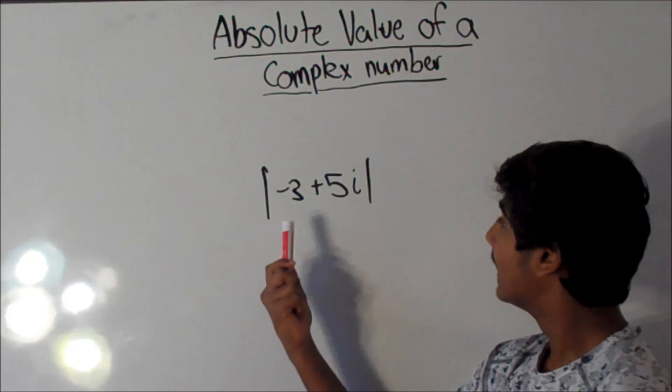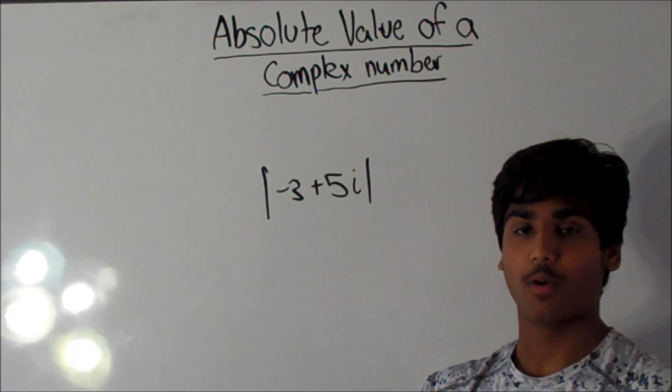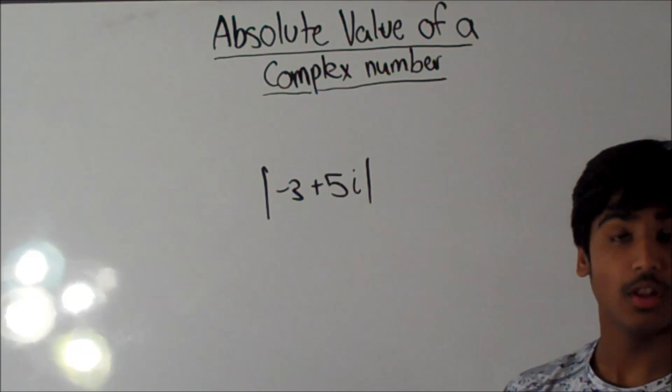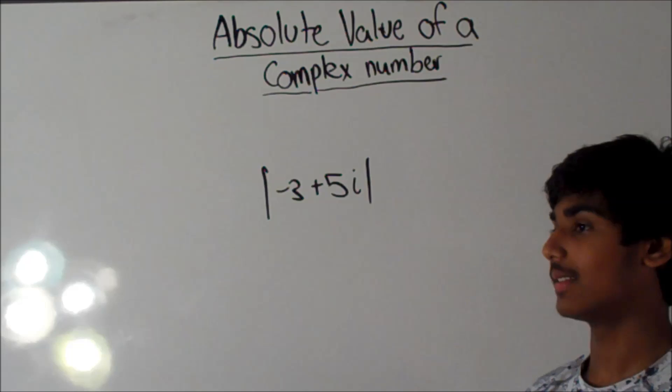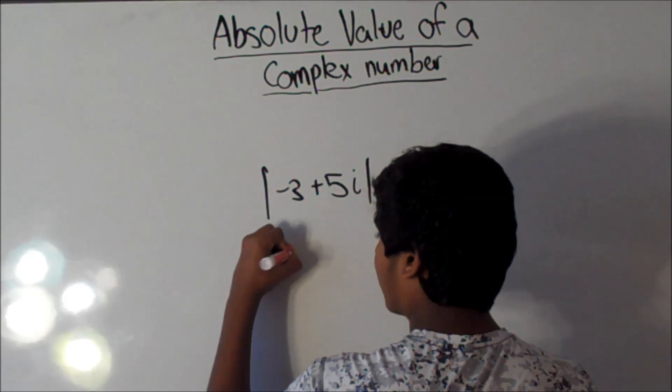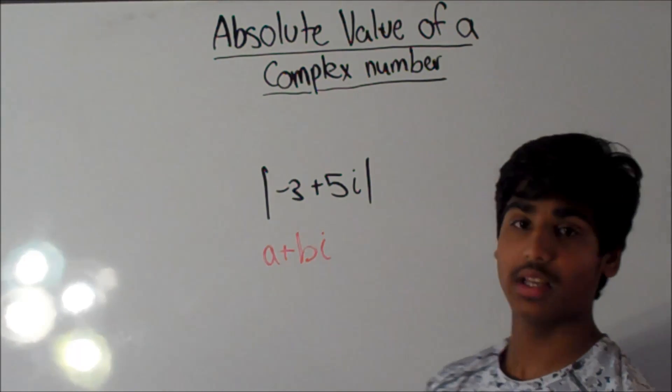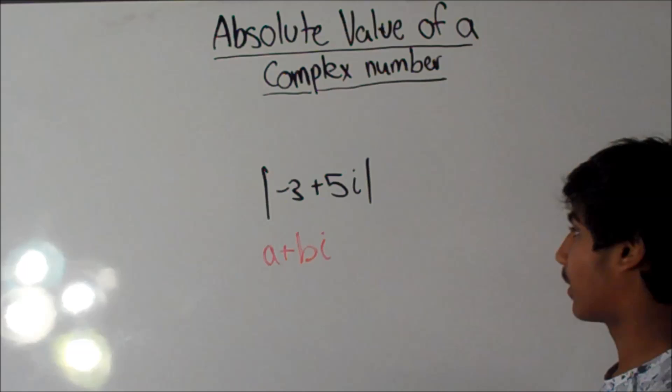Let's say we have the example negative 3 plus 5i. Before we start solving for it, let's figure out what a complex number is. A complex number is a plus bi, where i is equal to the square root of negative 1. But in this video, it's not very important.